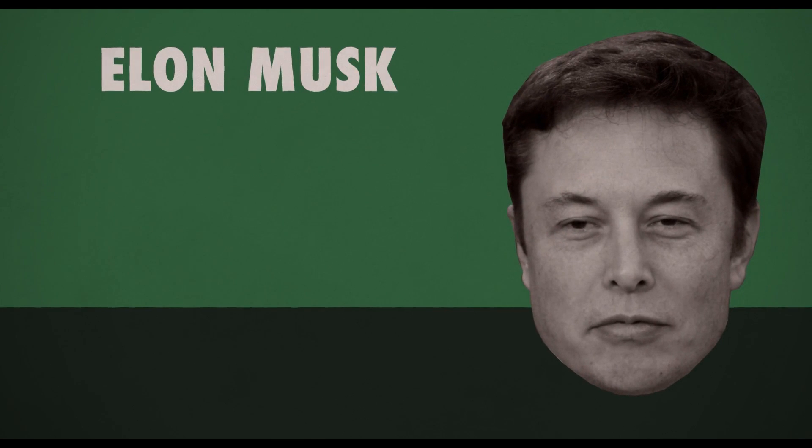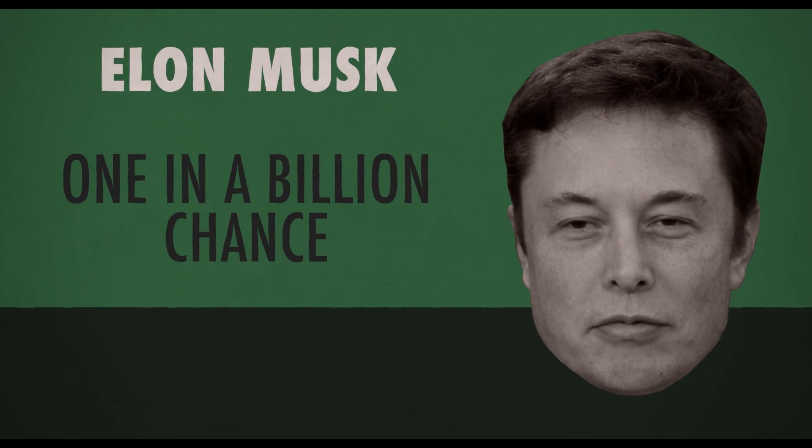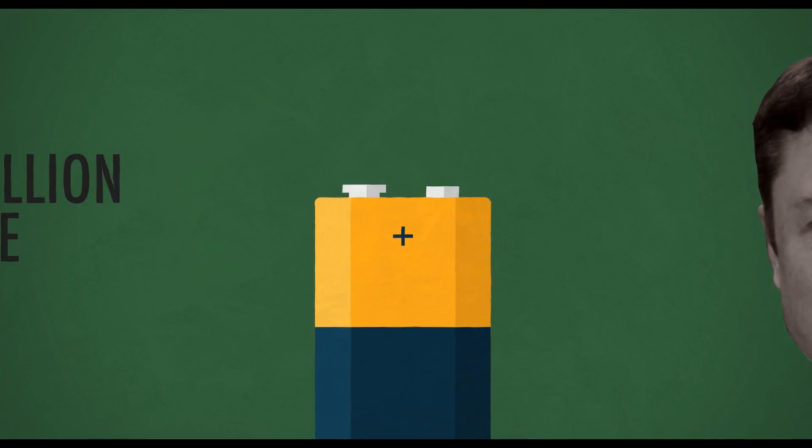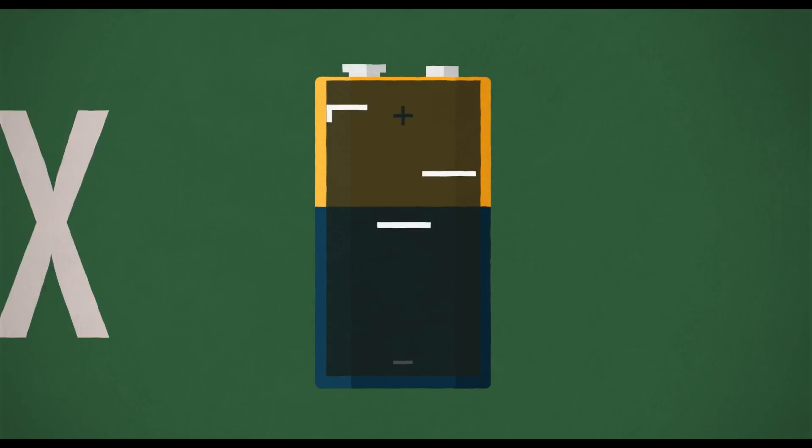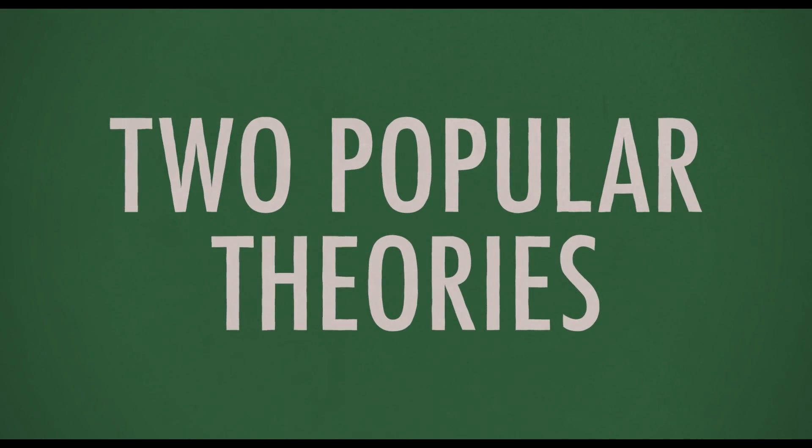Elon Musk has gone even further and suggested that there's actually only a one in a billion chance that we aren't merely existing in a construct. No one is saying that we're stored as battery cells like in the matrix, but there are two popular theories for how our existence might not be what it seems.